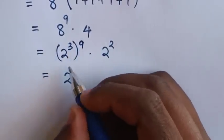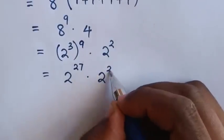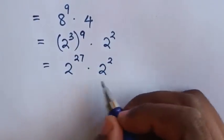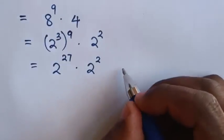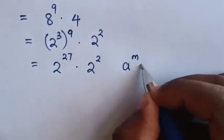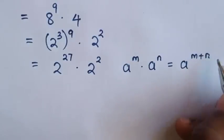2 power 27 times 2 power 2. This is a multiplication of exponents with same base but different powers, so we will apply this rule: a power m times a power n is equal to a power m plus n.